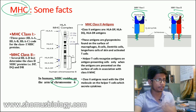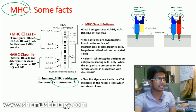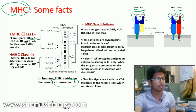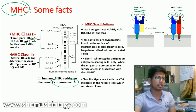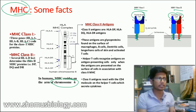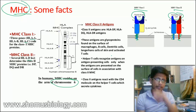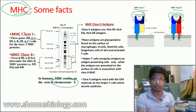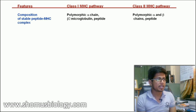MHC genes are normally present on chromosome number 6, and different genes code for different MHC proteins. For MHC class 1, three genes — HLA-A, HLA-B, and HLA-C — code for this complex. For MHC class 2, HLA-D genes code for the different protein chains that make up MHC class 2.